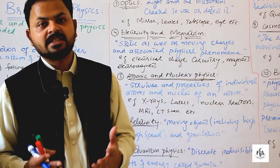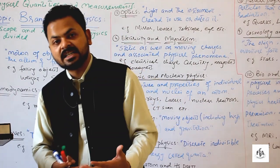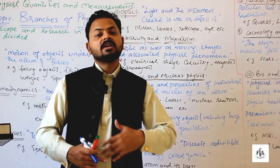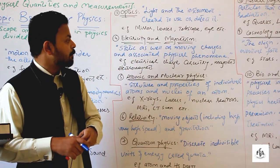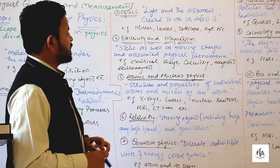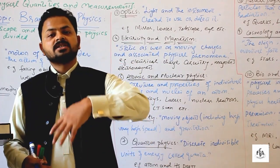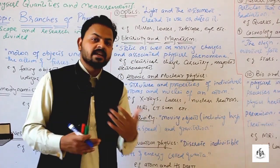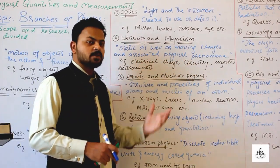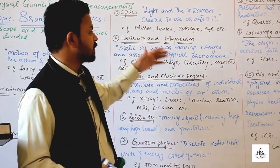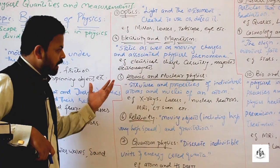Next is electricity and magnetism. In this branch, we discuss charges at rest and charges in motion — the behavior of static charges and moving charges, what kind of energy they possess. We study the production of electricity, motion of charges, electrical circuits, and magnets.